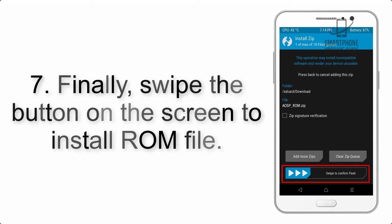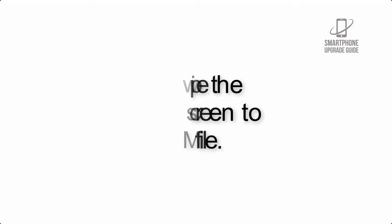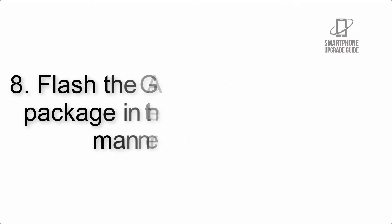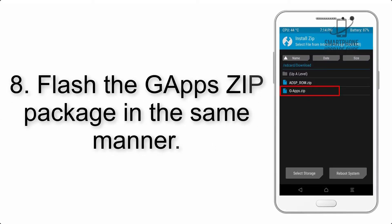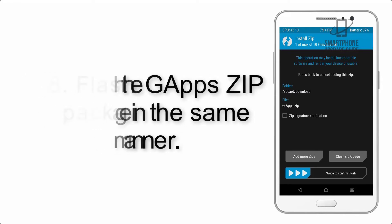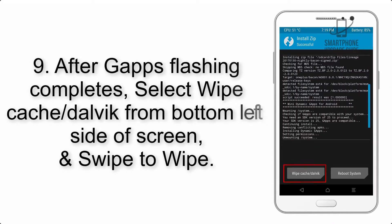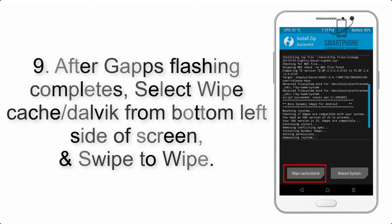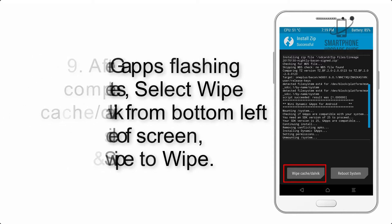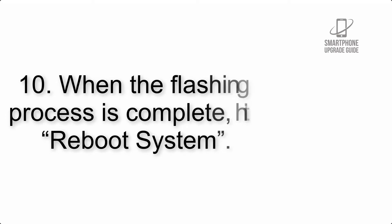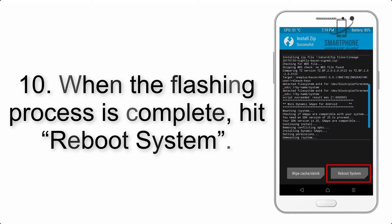Step 7: Swipe the button on the screen to install the ROM file. Step 8: Flash the GApps zip package in the same manner. Step 9: After GApps flashing completes, select Wipe Cache and Dalvik from the bottom left side of the screen and swipe to wipe.